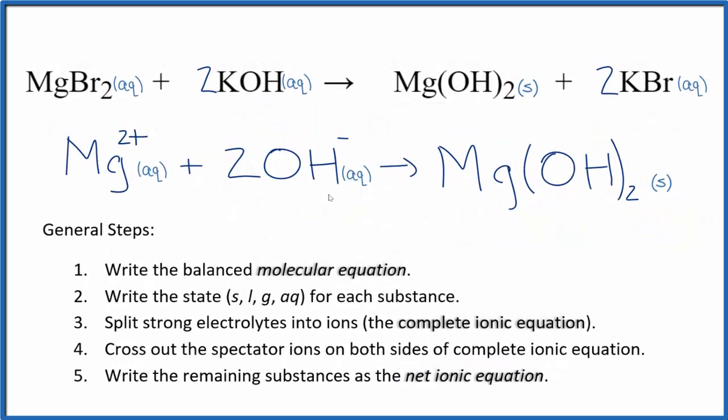So this is the balanced net ionic equation for MgBr2 plus KOH. Charge is conserved. We have two plus, then two times one minus, that's two minus. So these add up to zero, net charge of zero in the reactants. In the products, this is a neutral compound, net charge of zero. So charge is conserved, and if you count the atoms up, they'll be balanced as well.